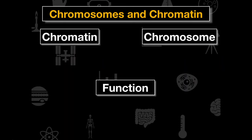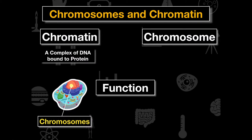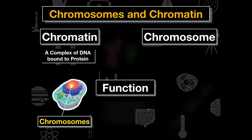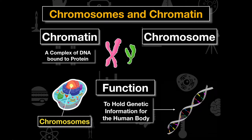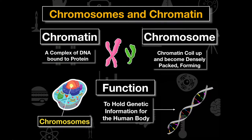Chromosomes and chromatin are found in the center of the nucleus. They are complex DNA — a nucleotide polymer — bound to proteins called histones. The nucleus holds this genetic information, which is important for the human body to function. Chromosomes are super densely coiled packs that only form during meiosis and mitosis, while chromatin is the normal form DNA exists in within the nucleus.